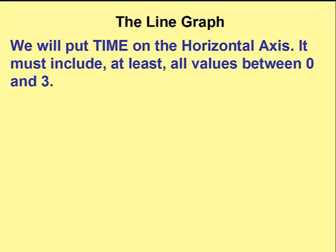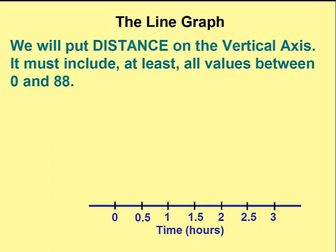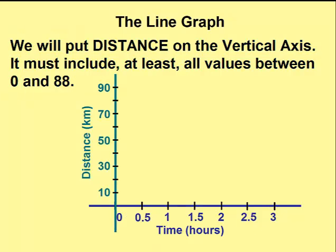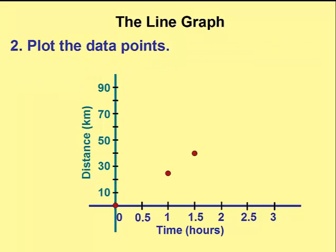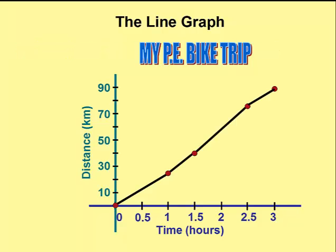To make a line graph, first draw a horizontal and vertical axis that will accommodate all the data. Time is usually put on the horizontal axis — in this case we include all values between 0 and 3. Distance goes on the vertical axis, including all values between 0 and 88, counting by tens. Now we plot our data as dots on the axes, then draw lines between the data points. Finally, we put in our title: here's what we did on our physical education bike trip.